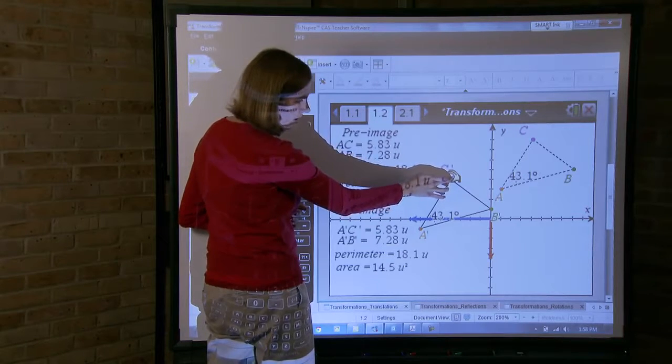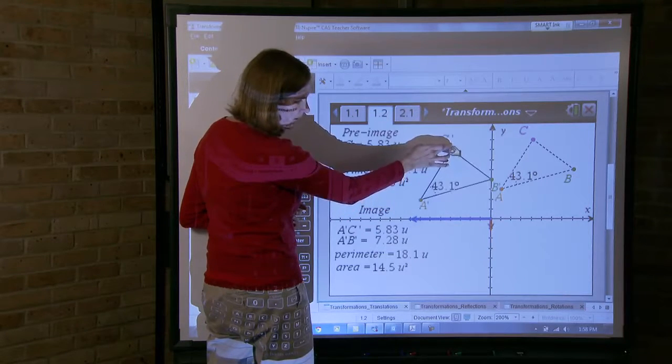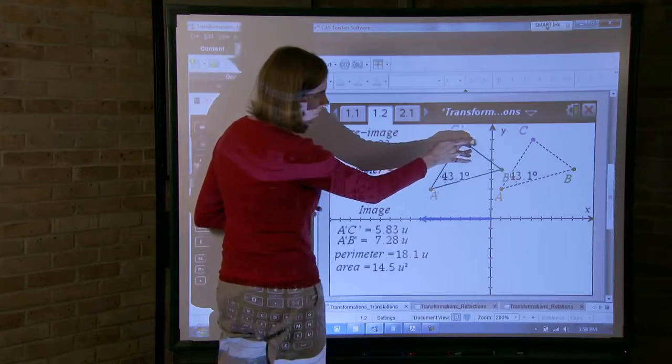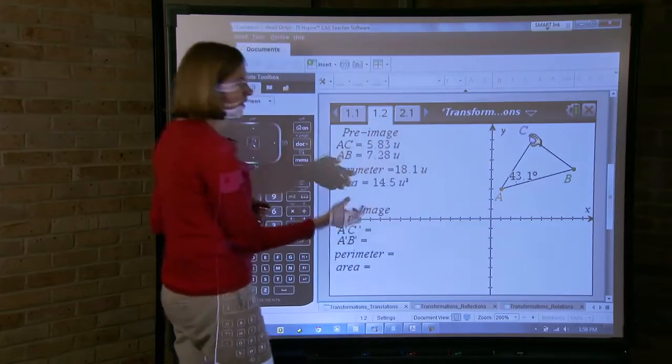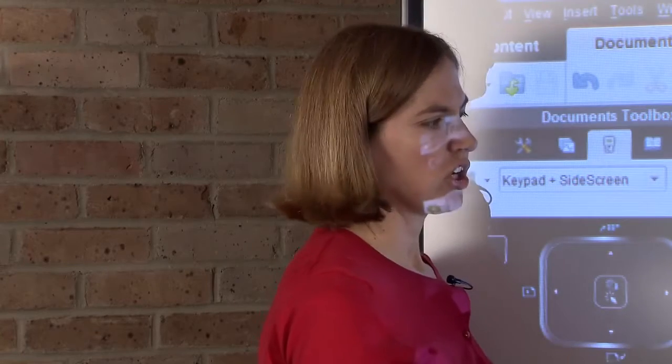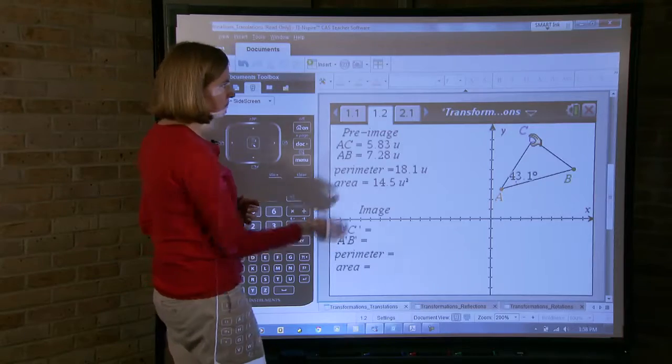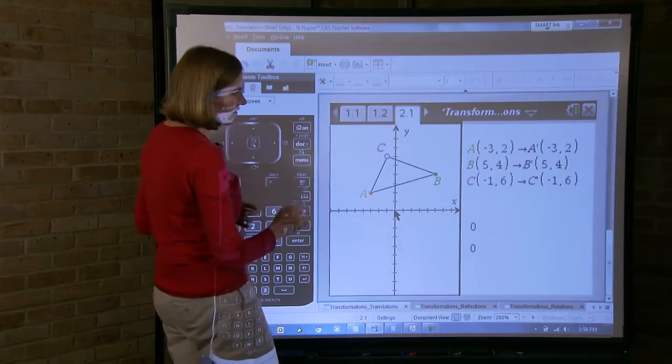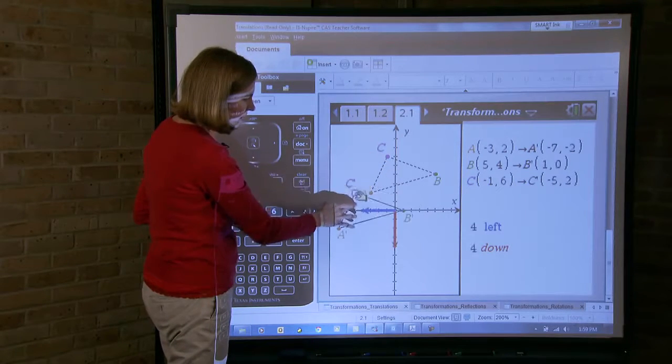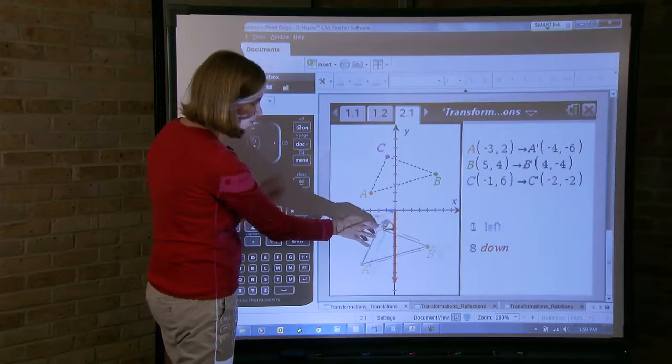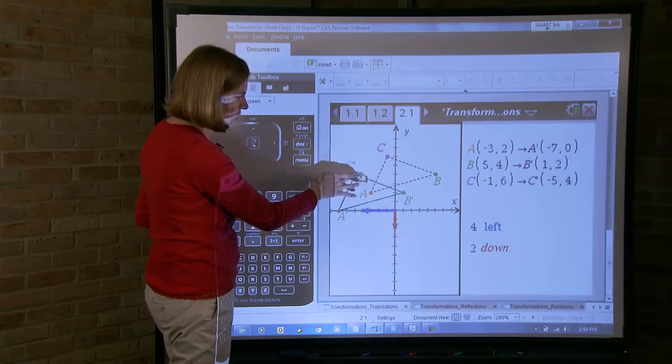How can we show that this triangle A prime, B prime, C prime is congruent to triangle ABC? If we take this triangle and we move it up a certain number of units and we move it to the right a certain number of units, then the pre-image and the image are congruent to each other. As you move throughout the document, you deal with transformations in the coordinate plane. In particular, of course, here, translations in the coordinate plane.